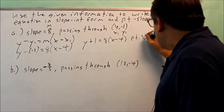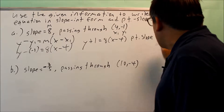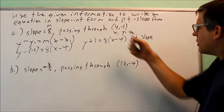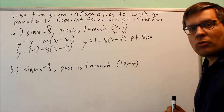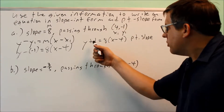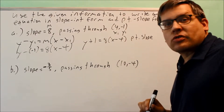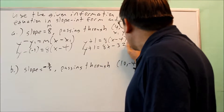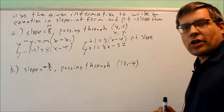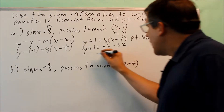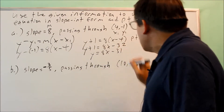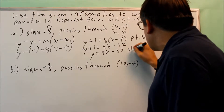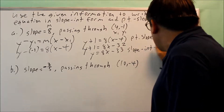That is the first answer — the point-slope form. But I want to keep going and get it into slope-intercept form. To do that, I distribute the 8 and solve for y: y plus 1 equals 8x minus 32. Subtracting 1 from both sides gives y equals 8x minus 33. That is the slope-intercept form.